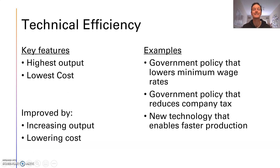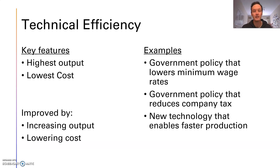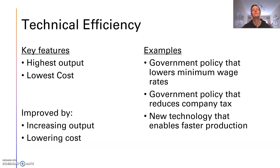The first one we're going to talk about is technical efficiency. When we think of the word technical, I want you to think of factories and robots and trying to make stuff in the most efficient way possible. The key feature of technical efficiency is the allocation of resources which achieves the highest output with the lowest cost. I like to think of this as squeezing as much as we can from the wet oily rag of the economy — there's not a drop left when we're getting absolutely everything out.